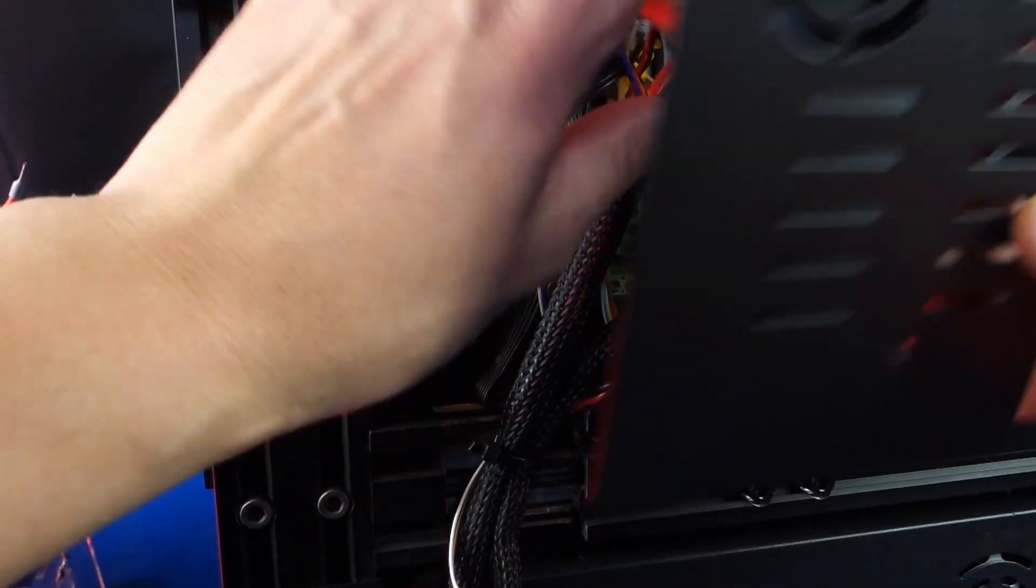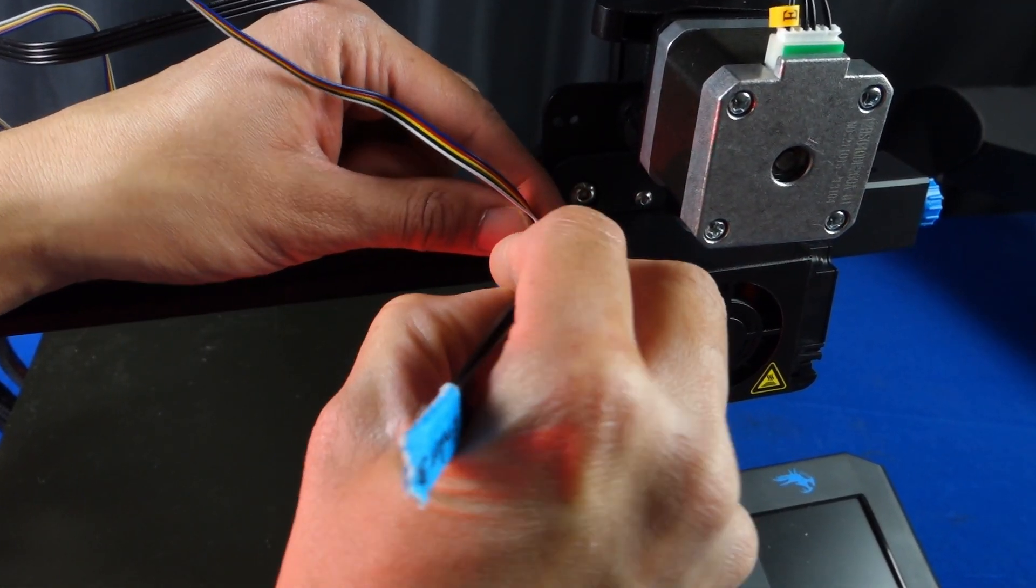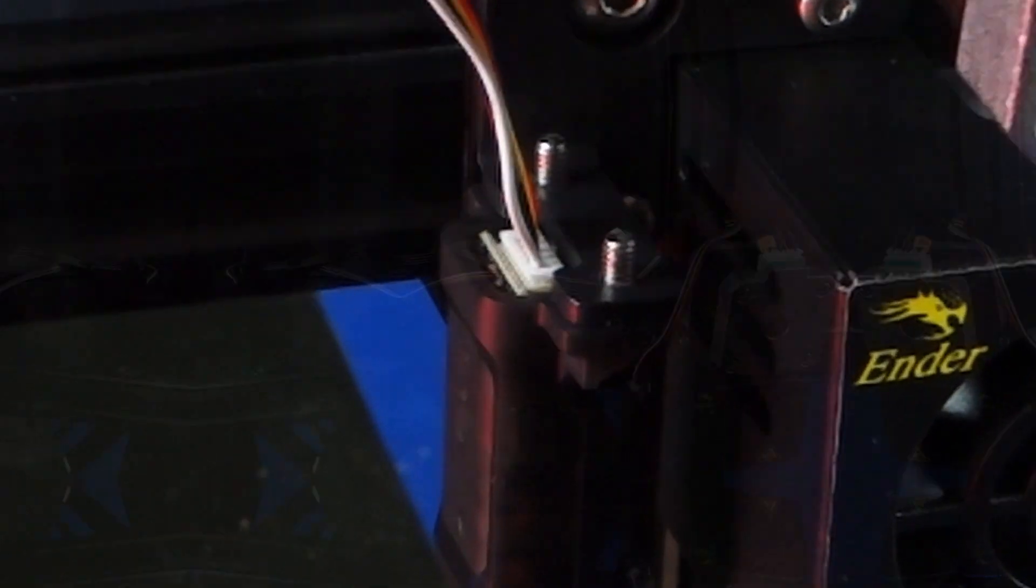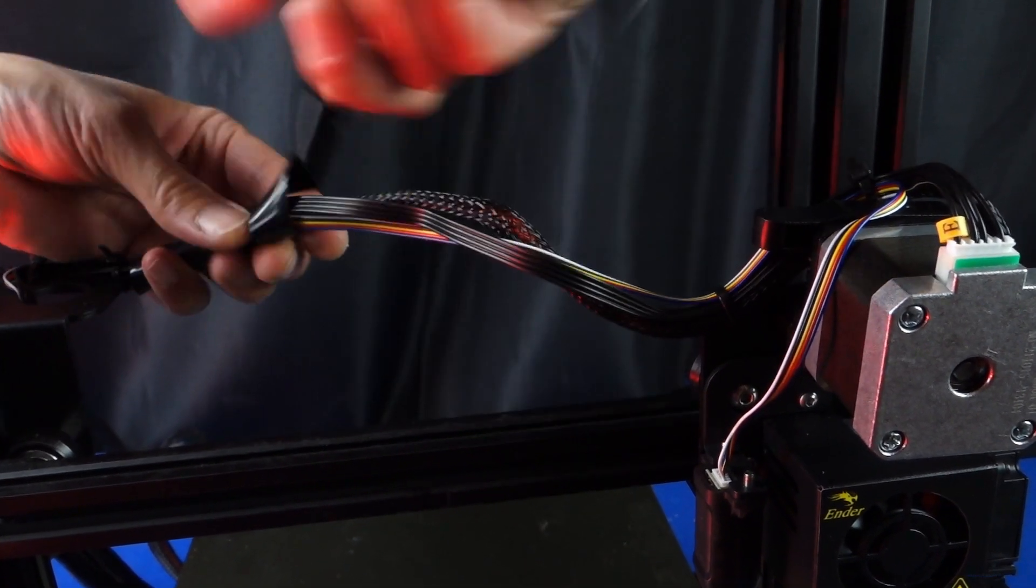When connecting the CR Touch connections make sure to check where the pins are oriented since it can require a bit of pressure to connect it properly. I ended up using a pair of pliers to help push it down into place. After some quick cable management the printer was ready for operation and I began my first test prints.